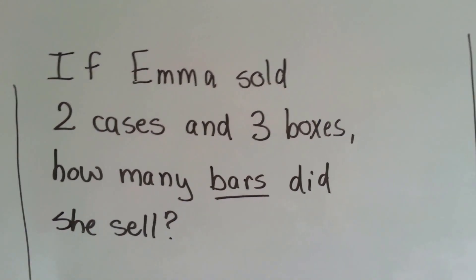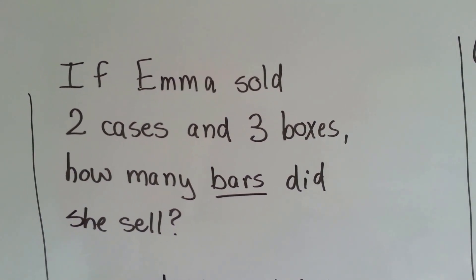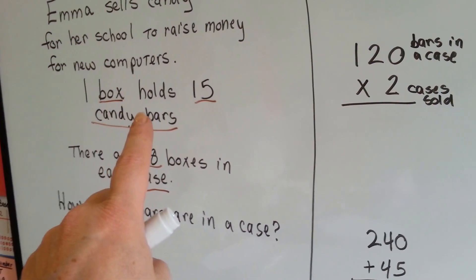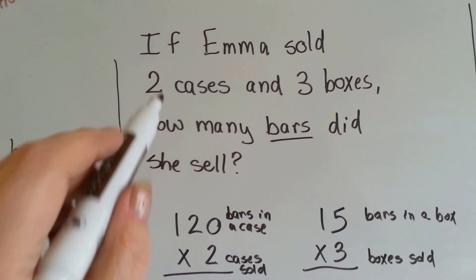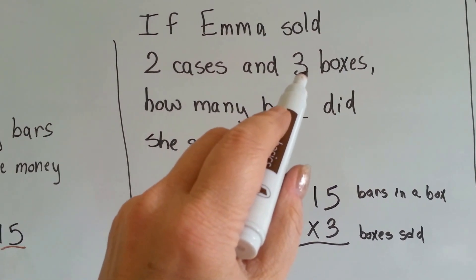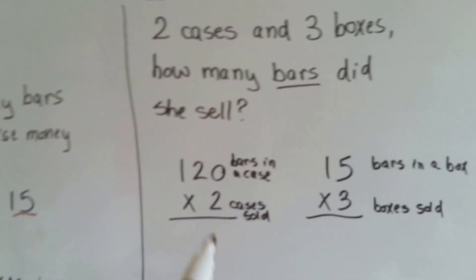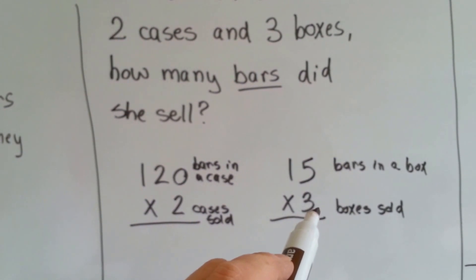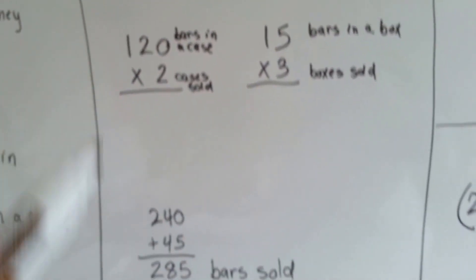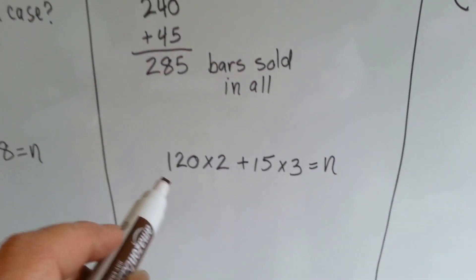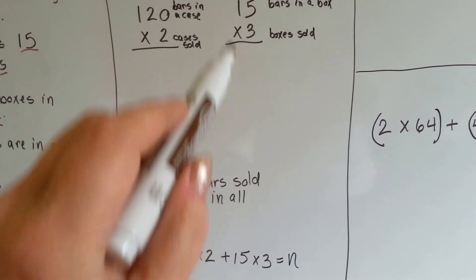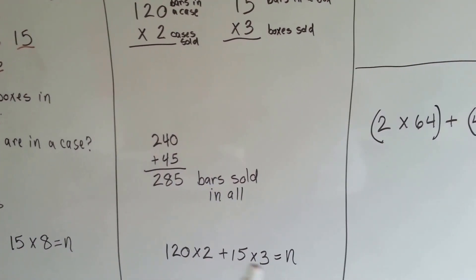If Emma sold 2 cases and 3 boxes, how many bars did she sell? Remember, there's 120 bars in a case, there's 15 bars in a box. She sold 2 cases. We need to do 120 bars times the 2 cases she sold. And then she also sold 3 boxes, and there's 15 bars in a box. So we need to do 15 times the 3 boxes she sold. Then we need to add these two together to get the complete total. So the equation would be 120 times 2 plus 15 times 3 equals n. That's our equation.